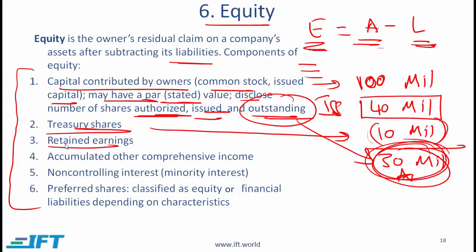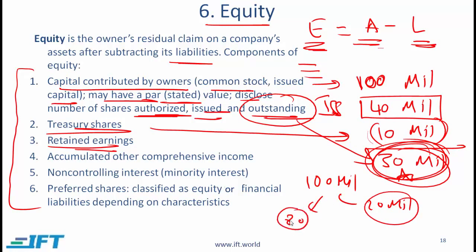Retained earnings refers to the earnings that a company has generated which have not been paid out as dividends. A company might generate 100 million in profits, of which it might pay out 20 million as dividends and retain 80 million — this 80 million would be called retained earnings. Next year, a company might retain another 80 million, creating a total of 160 million in retained earnings. This is considered equity because the money really belongs to shareholders who are plowing it back into the company.